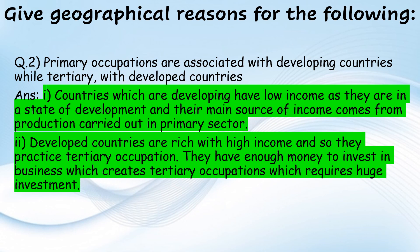Primary occupations are associated with developing countries, while tertiary occupations are associated with developed countries. Countries which are developing have low income, and their main source of income comes from production carried out in the primary sector. Developed countries are rich with high income, so they practice tertiary occupations. They have enough money to invest in business, which creates tertiary occupations requiring huge investment.